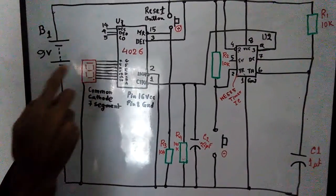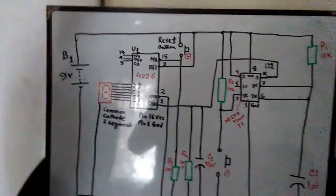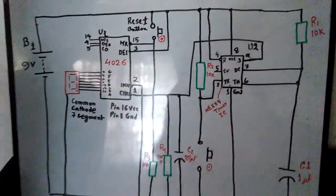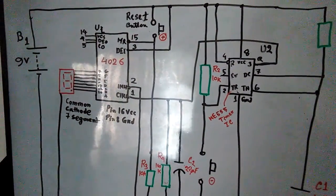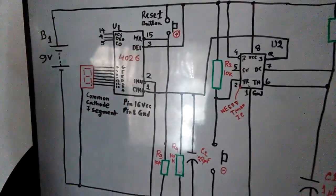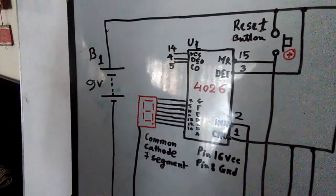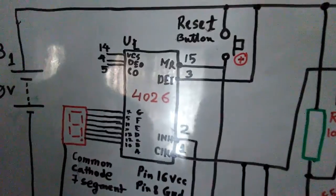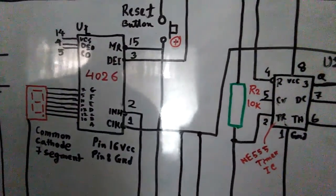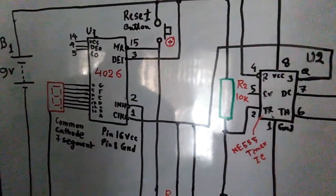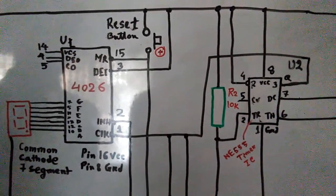For IC 4026: pin 4, 5, and 6 are used. Pin 4 is display enable out, pin 14 is the clock input, and pin 14 UCS. Pin 4 is display enable out and pin 5 is carry out. Pin 15 and pin 3 are master reset and display enable in.